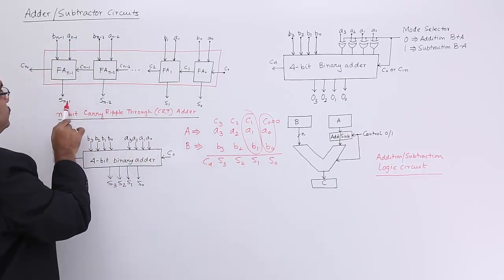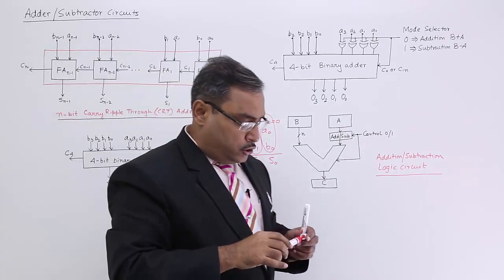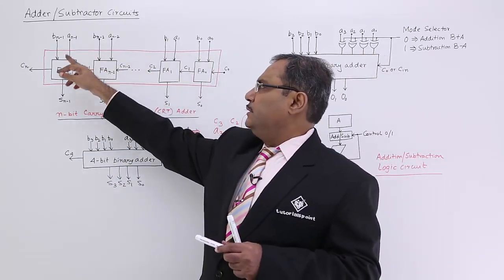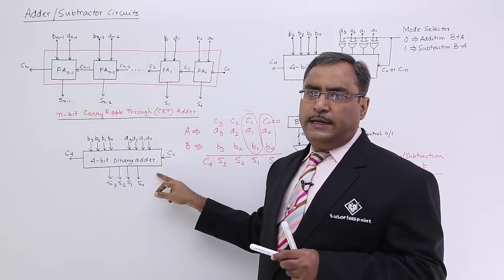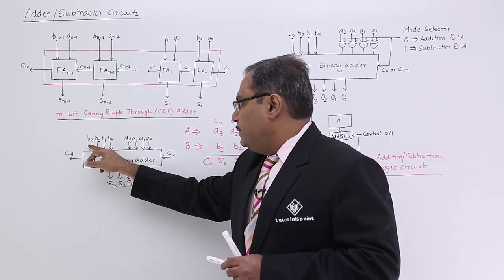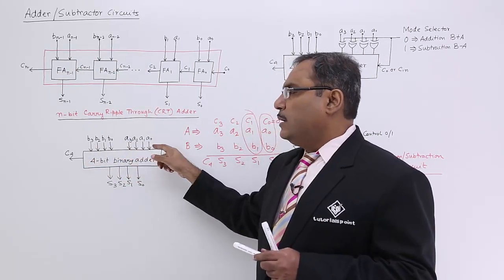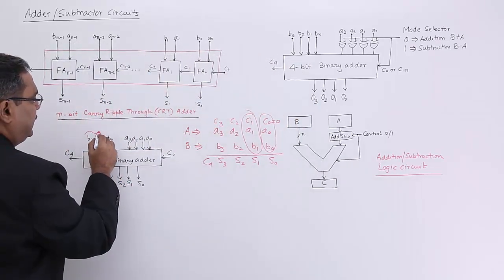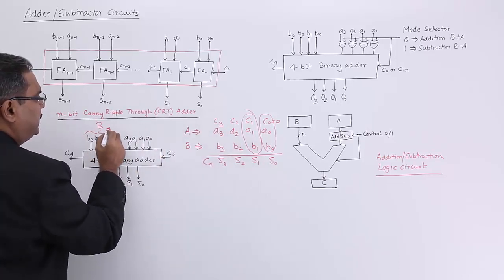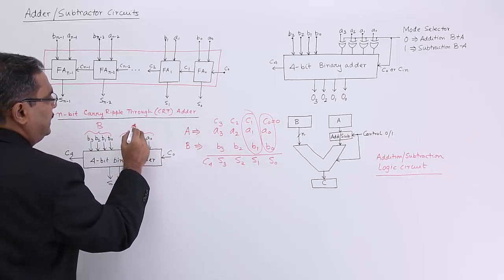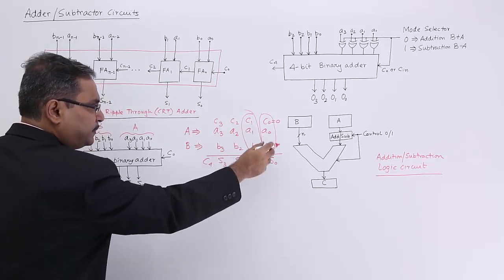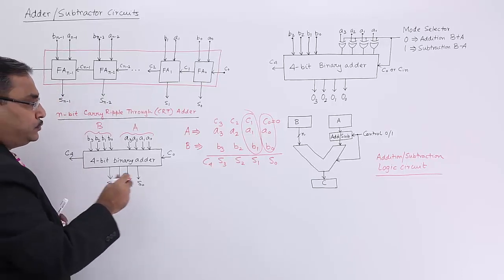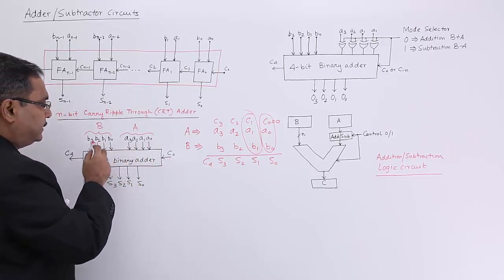In this way the addition is taking place. The full circuit can be represented using this schematic diagram. Here we are having B and A — B is of 4 bits and A is of 4 bits, as we did before. Whatever we discussed has been depicted in this particular diagram. C0 is the initial carry, and the rest follows accordingly.